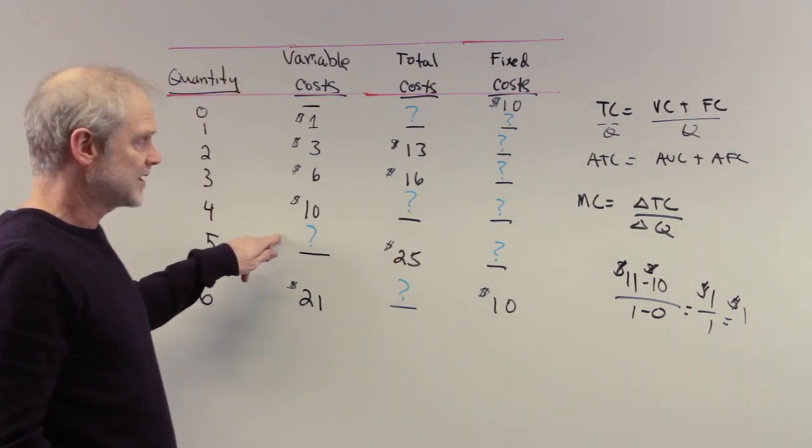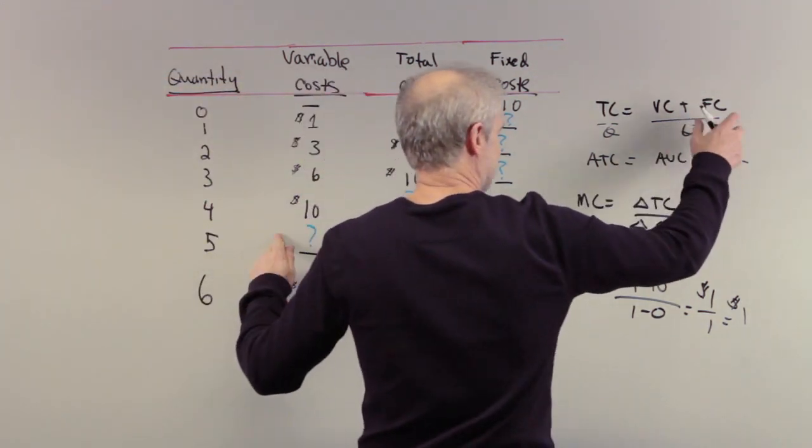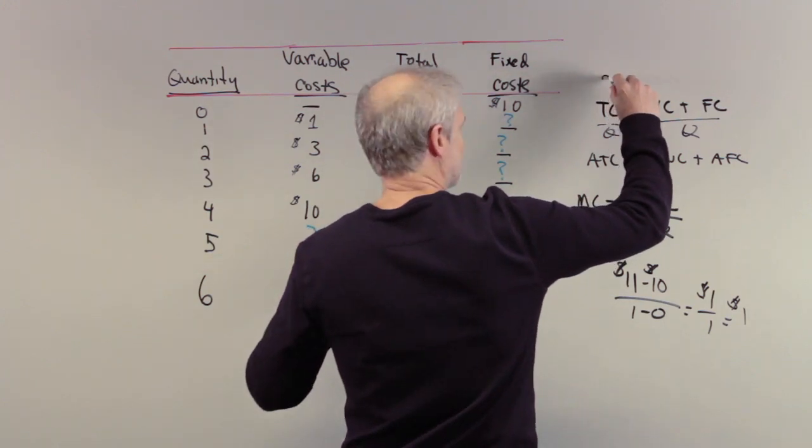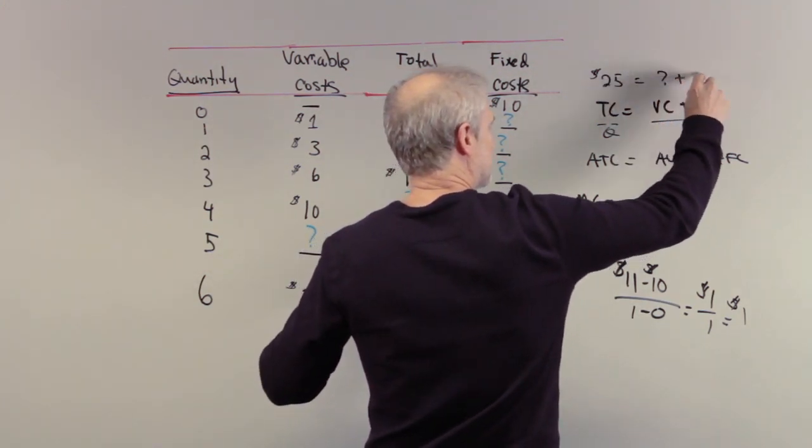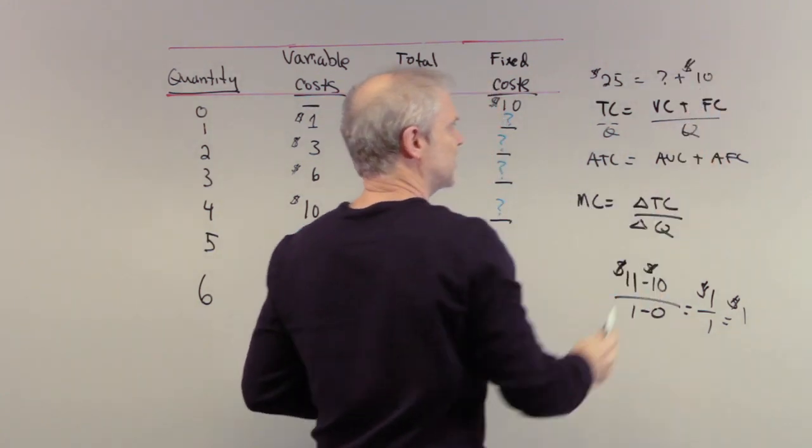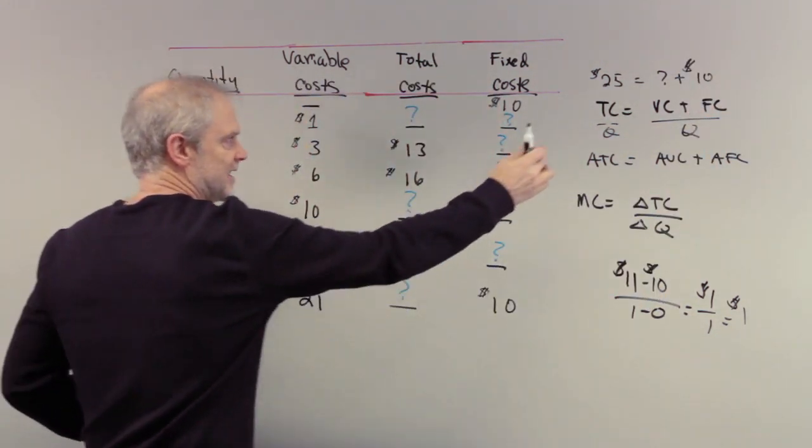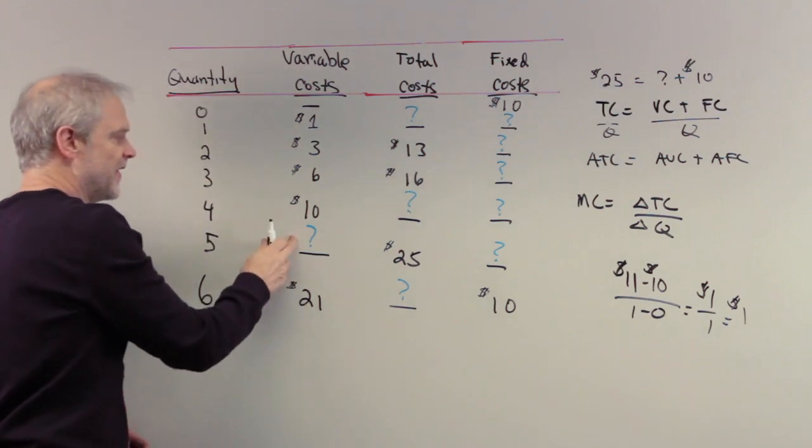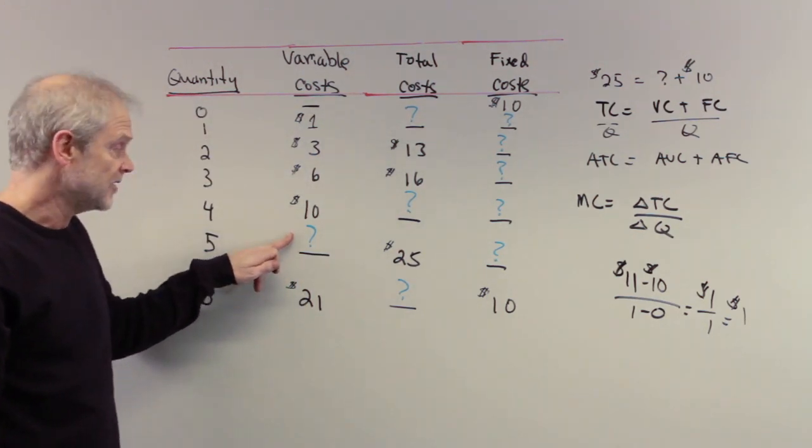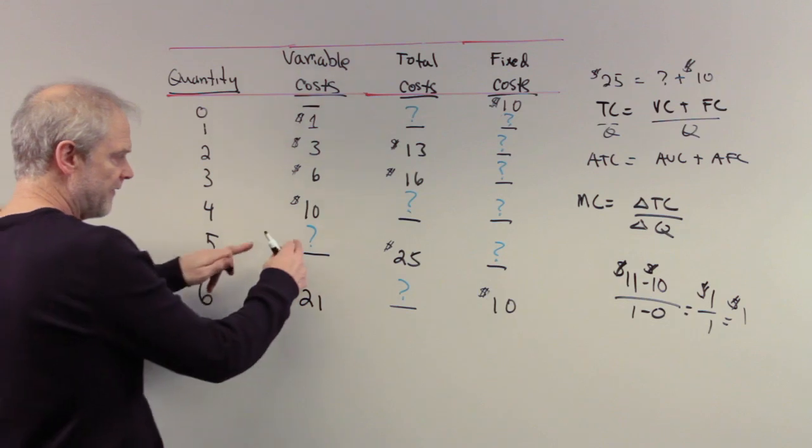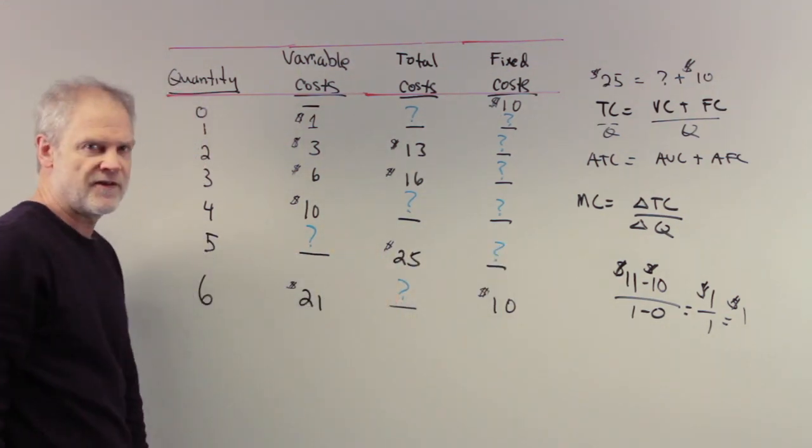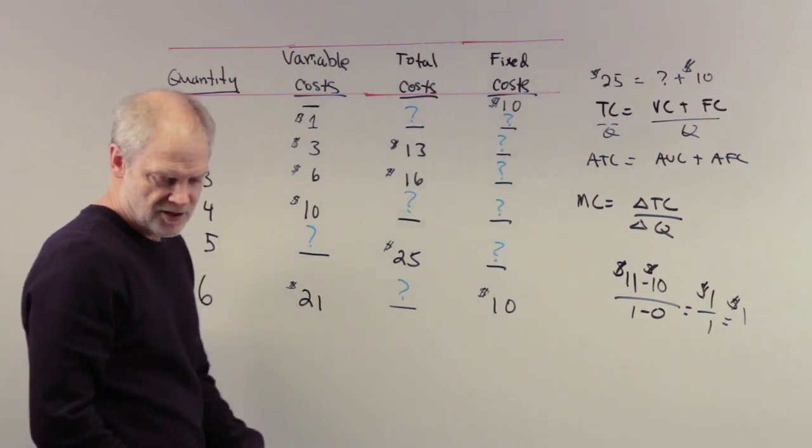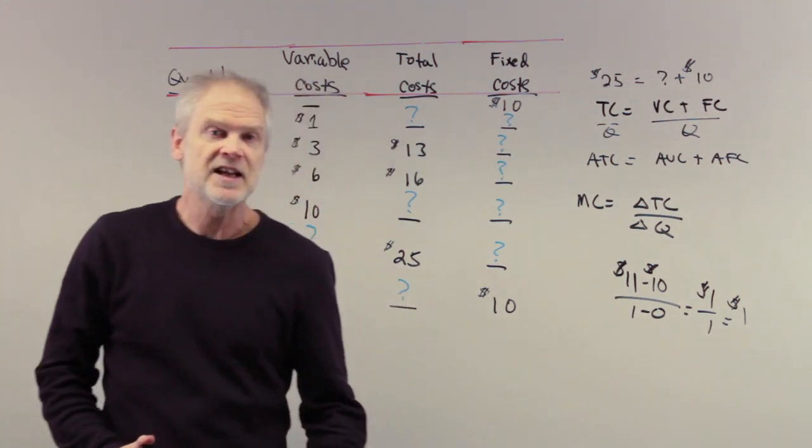Well, what do we know variable? No, that's the question mark. But do we know fixed? Yes. So we know the total cost of $25 is equal to the question mark plus $10. Because $10 is the fixed cost. So obviously this has to be $15. The variable cost at five units of output will be $15. Does it work? $15 in variable cost plus $10 give me $25 in total cost. So the answer to number seven is $15.